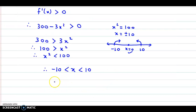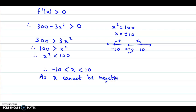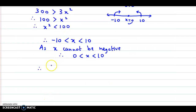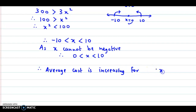But x represents the number of articles, which cannot be negative. As x cannot be negative, therefore this range reduces from 0 to 10. So x lies between 0 and 10. Therefore, we can say the average cost — f of x is the average cost — is increasing for x lying between 0 and 10.